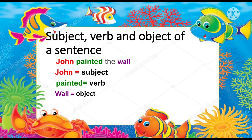Take note of three things in the sentence: the subject, the verb, and the object of a sentence. John painted the wall. John is the subject, painted is the verb, and wall is the object.